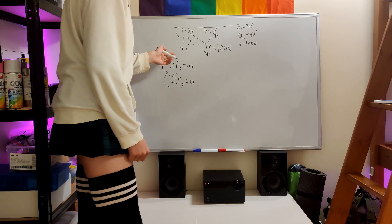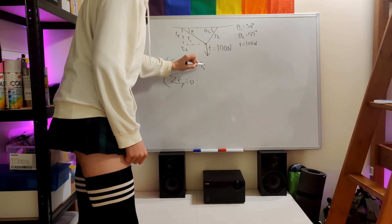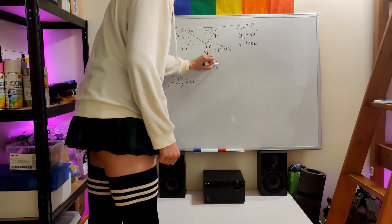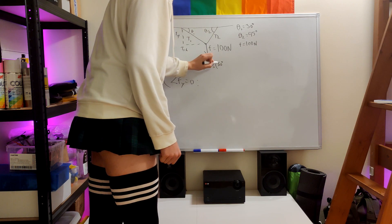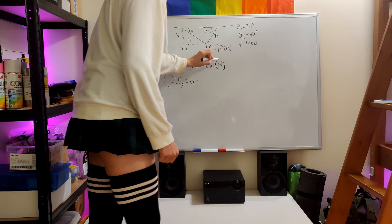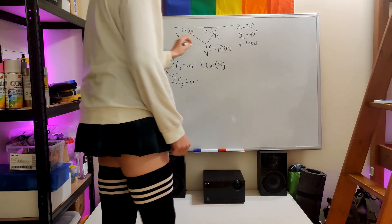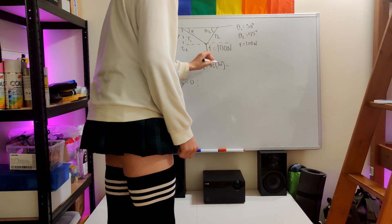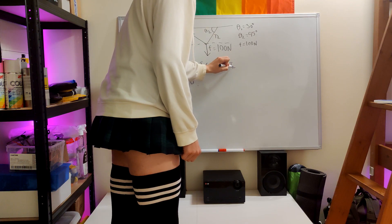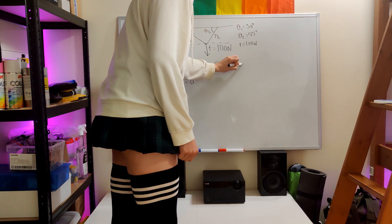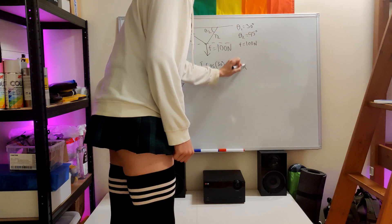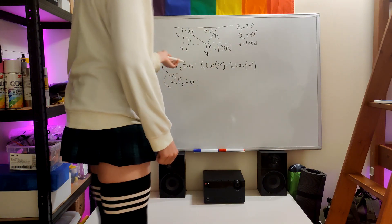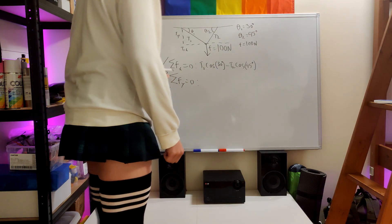So T1 cosine of 30 degrees minus T2 cosine of 45 degrees. And then we'll do the same for the vertical component.